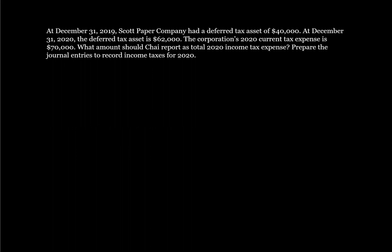Okay, so this is asking us to prepare the journal entries, giving us the deferred tax asset. But what we have here is an opening tax asset. So we've got the current tax expense of $70,000, which is given right here.